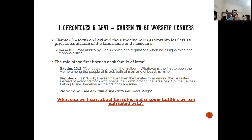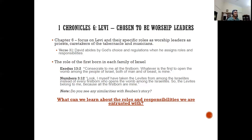Looking at these two parallel stories — Reuben's firstborn privileges being bypassed, and the firstborn of every Israelite family being bypassed in favor of the Levites — there's a lesson for us. Each and every one of us has roles and responsibilities. So the first question to reflect on is: what can you learn about the roles and responsibilities you are entrusted with in the Lord's plan?